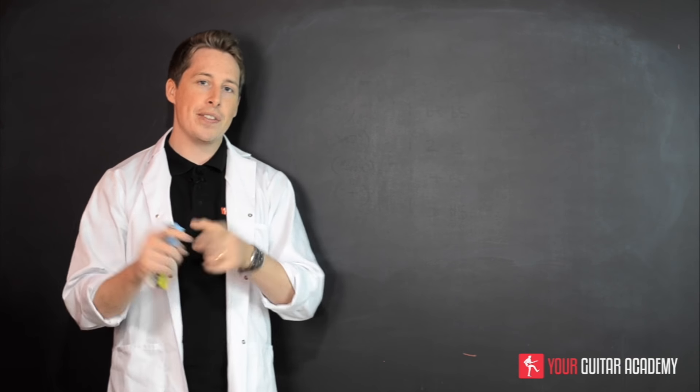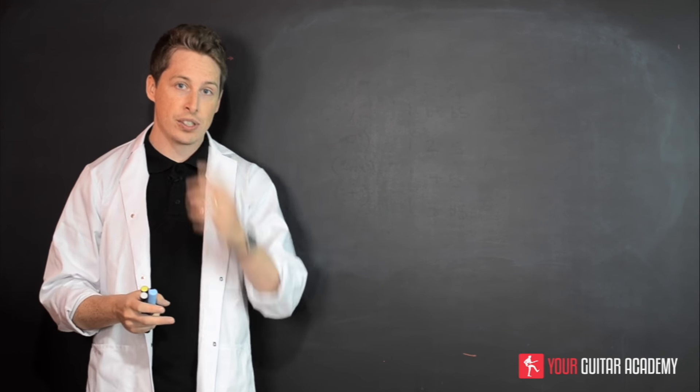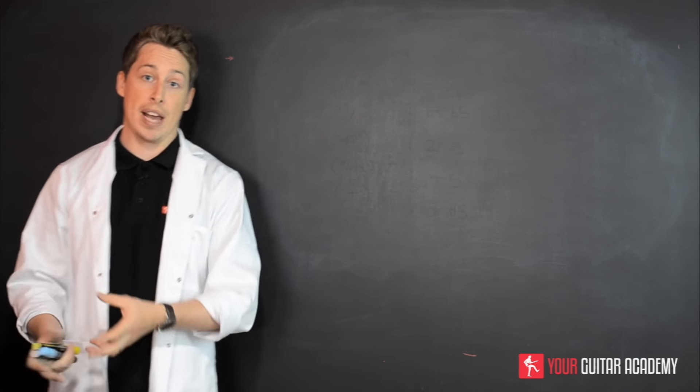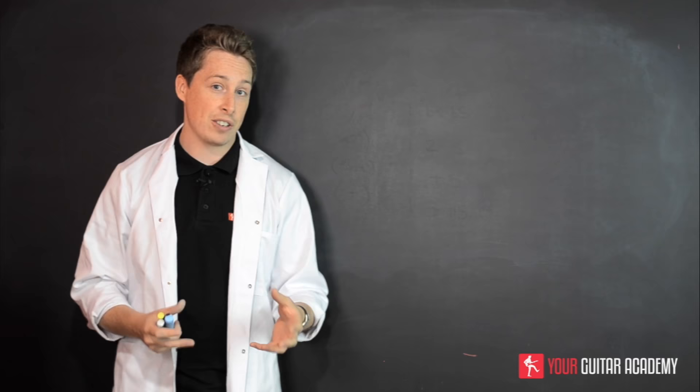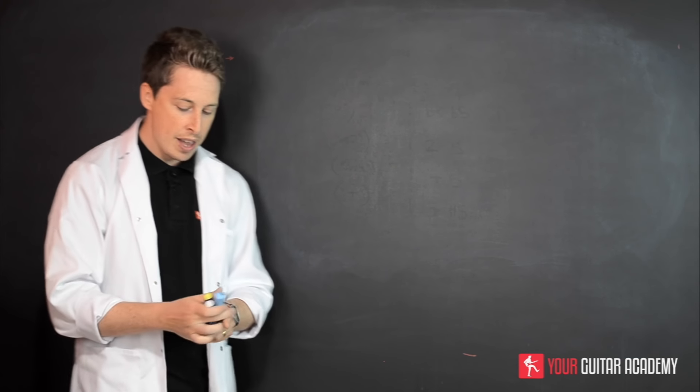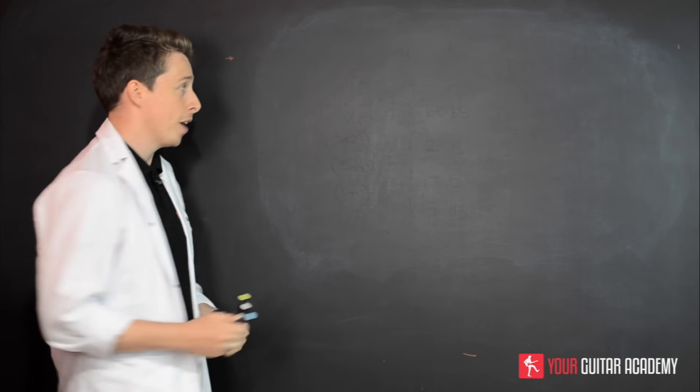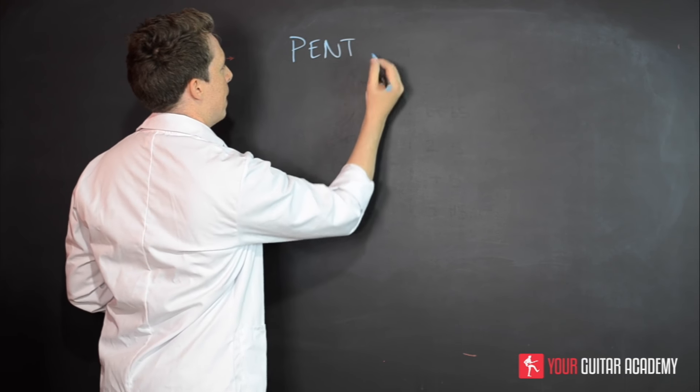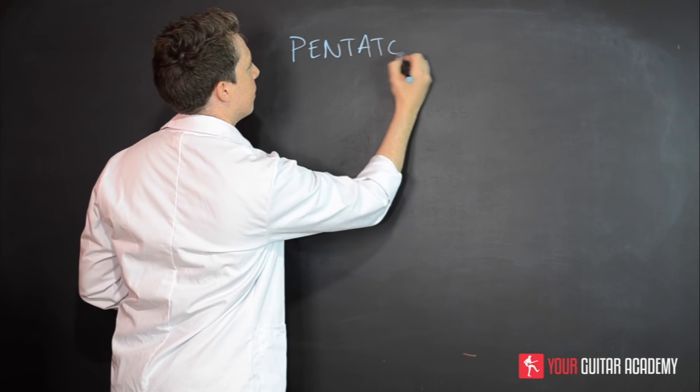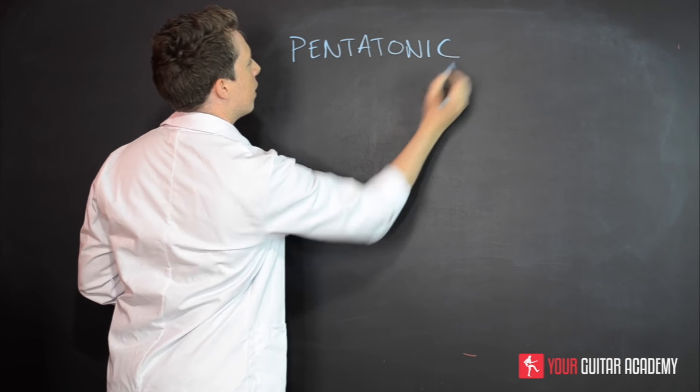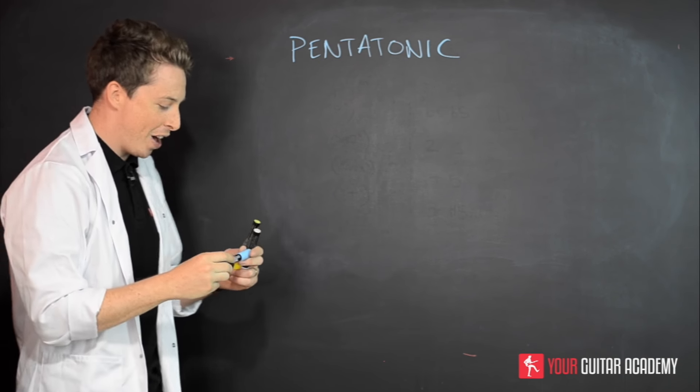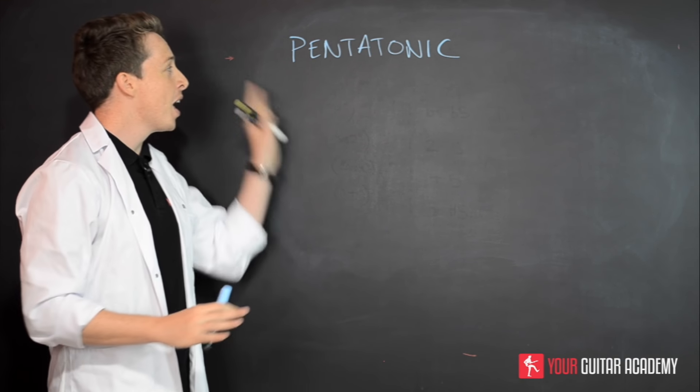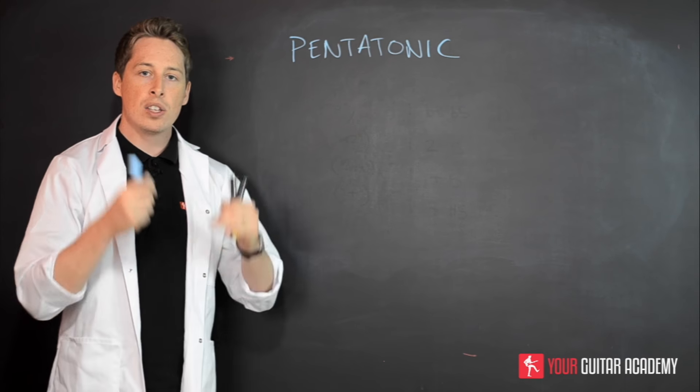So the first thing in this introduction video that I want to get across to you is the pentatonic simply means five-note scale. That's pretty much a direct translation of the word. So let's just write the word up there - pentatonic. This 'pent' bit means five. Now I'm not a linguist so I'm not gonna go into any more detail than that, but it simply means a five-note scale.